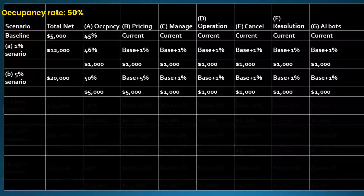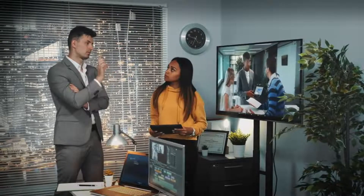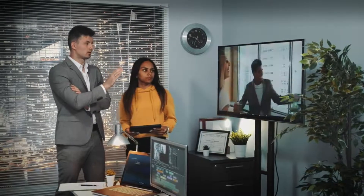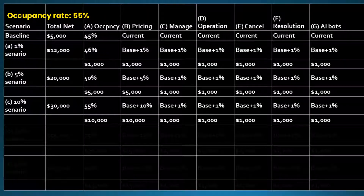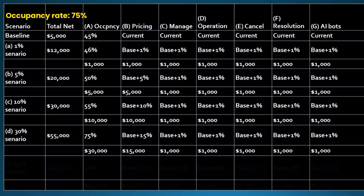That represents a three times or six times improvement. A lot of dynamic pricing software services and pricing gurus claim they can increase sold prices by thirty percent or more, and that occupancy rates can exceed ninety percent. In Scenario C, the net profit increases from five thousand dollars to thirty thousand dollars, or from five percent to thirty percent — a six times improvement.